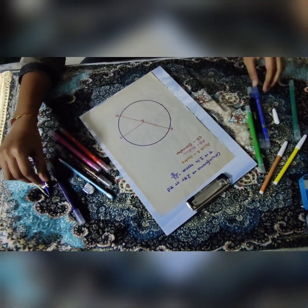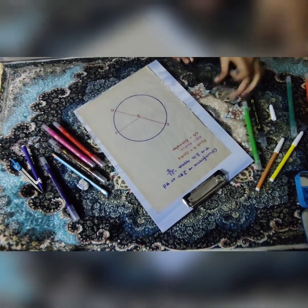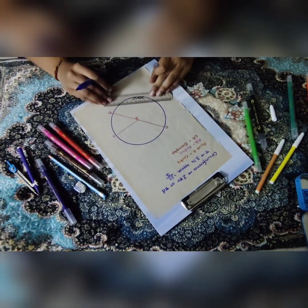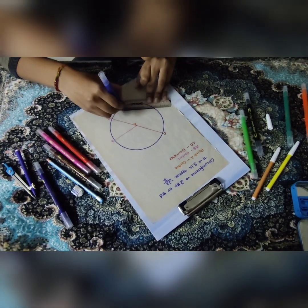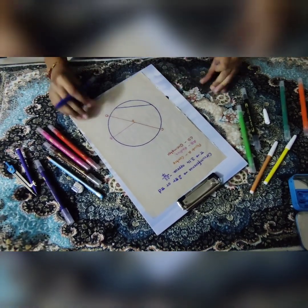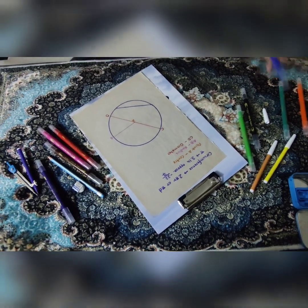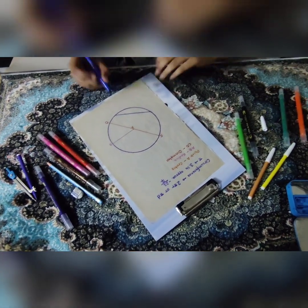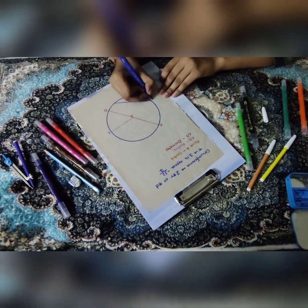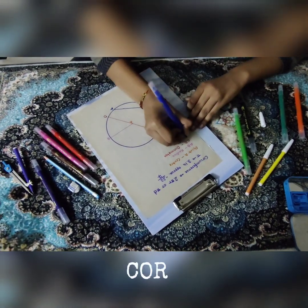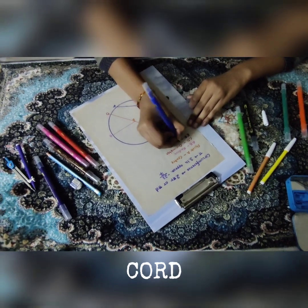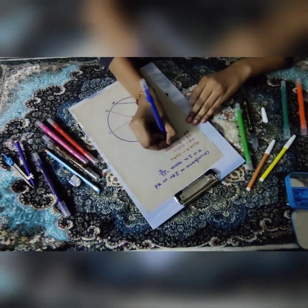The next thing we have is the chord. A chord is basically a line segment that is joined from one end of the circumference to the other. Like I said, the longest chord is the diameter. So my chord is EF.